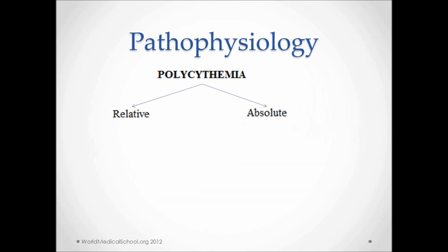Relative polycythemia is due to low-volume states. Absolute can be further categorized into primary and secondary. Primary polycythemia is due to polycythemia rubra vera. Secondary polycythemia can be further divided into appropriate and inappropriate. I will discuss each of these in some detail in the next couple of slides.